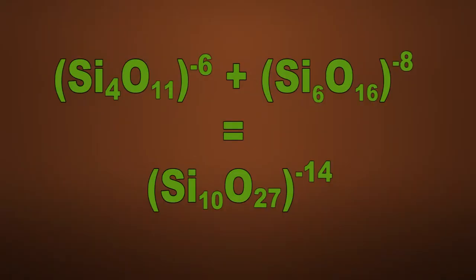The chain consists of alternate double and triple chains, but the two types are not cross-linked. The composition of the mixed chain can be found from a mixture of double and triple chain compositions: SI4O11⁻⁶ plus SI6O16⁻⁸ equals SI10O27⁻¹⁴.